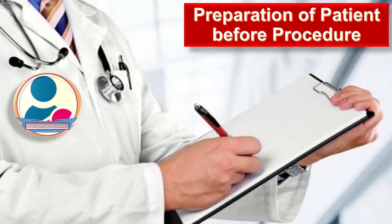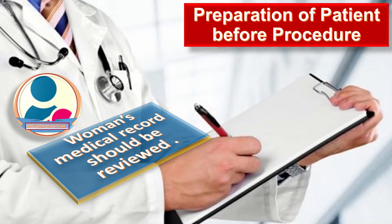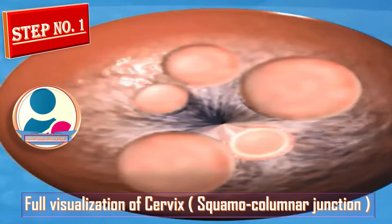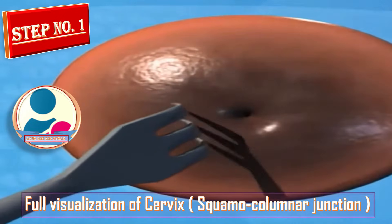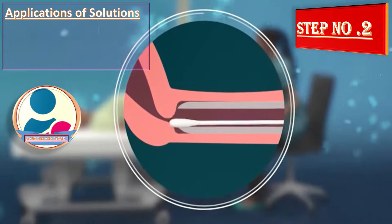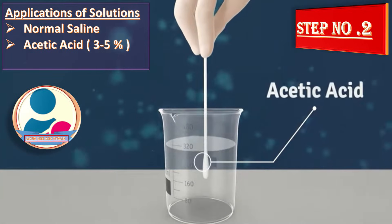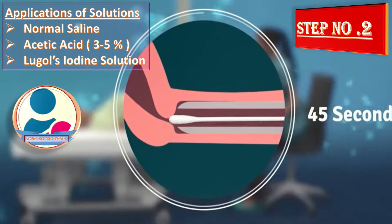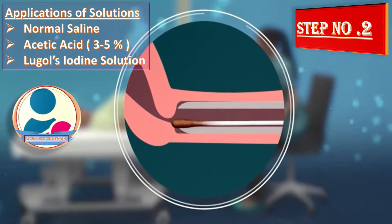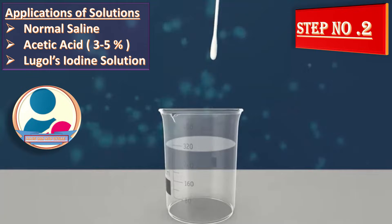Before the procedure, a woman's medical record including gynecologic and dysplasia histories should be reviewed to ensure there is a legitimate indication. Step one is full visualization of the cervix and squamous columnar junction. Step two is application of solutions: normal saline, acetic acid at three to five percent, and Lugol's iodine solution. After application of each solution, cervical changes are visualized using the colposcope.